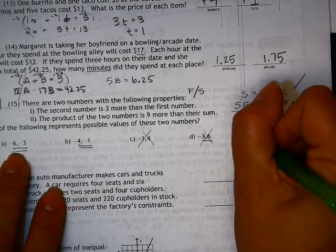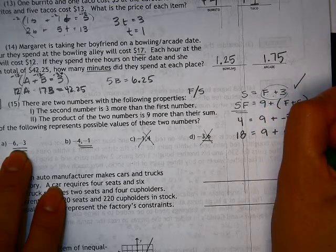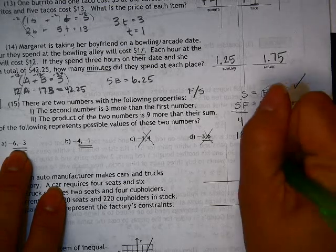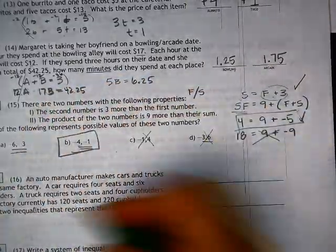Here, their product is positive 18, and that's equal to 9 plus their sum, which is negative 9, and this one does not work. So this is our magic little button of workiness.